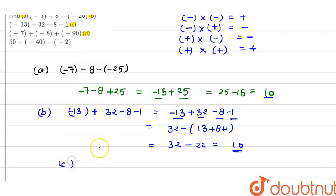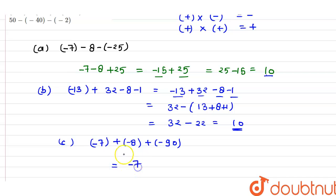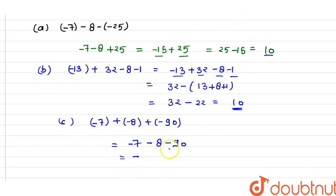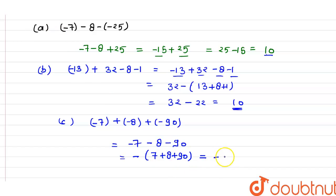The third part C is: minus 7, plus minus 8, and plus minus 90. Solving this: minus 7 stays minus 7; multiplying plus with minus gives minus 8; multiplying plus with minus also gives minus 90. Taking minus common from all three terms leaves 7 plus 8 plus 90. Adding these gives 105, so the answer is minus 105.